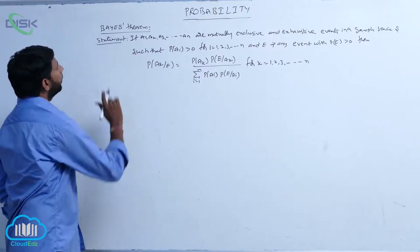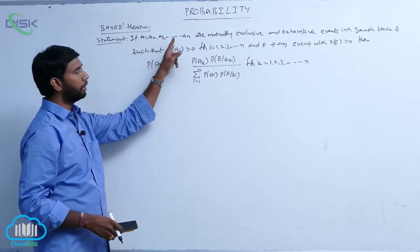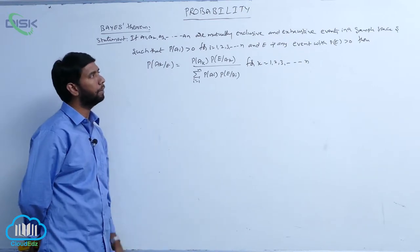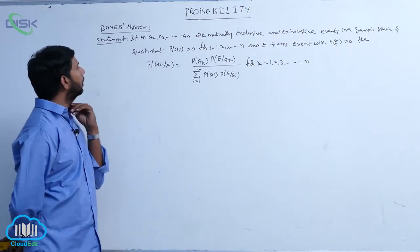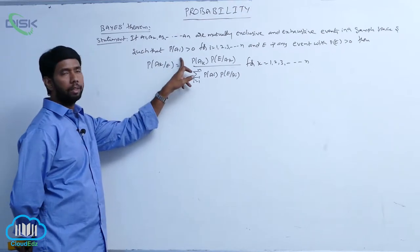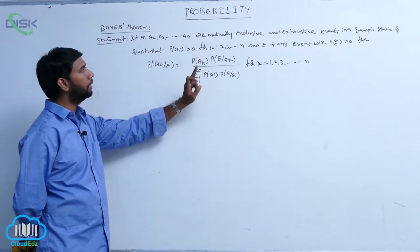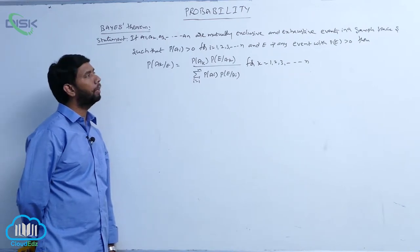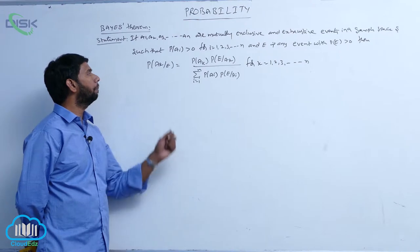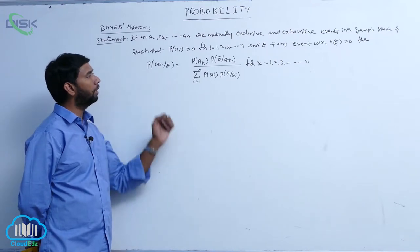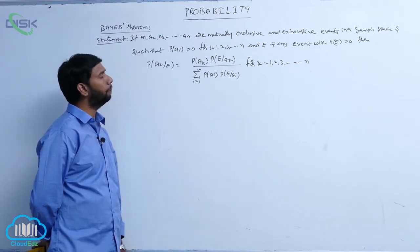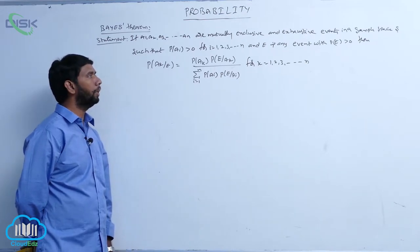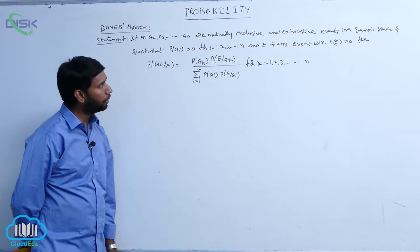Bayes' theorem. Statement of Bayes' theorem: if A1, A2, A3, and so on An are mutually exclusive and exhaustive events in a sample space, such that P(Ai) is greater than 0 for i equal to 1, 2, 3, and so on n, and E is any event with P(E) greater than 0, then P(Ak given E) is equal to P(Ak) times P(E given Ak) divided by the sum over i from 1 to n of P(Ai) times P(E given Ai).